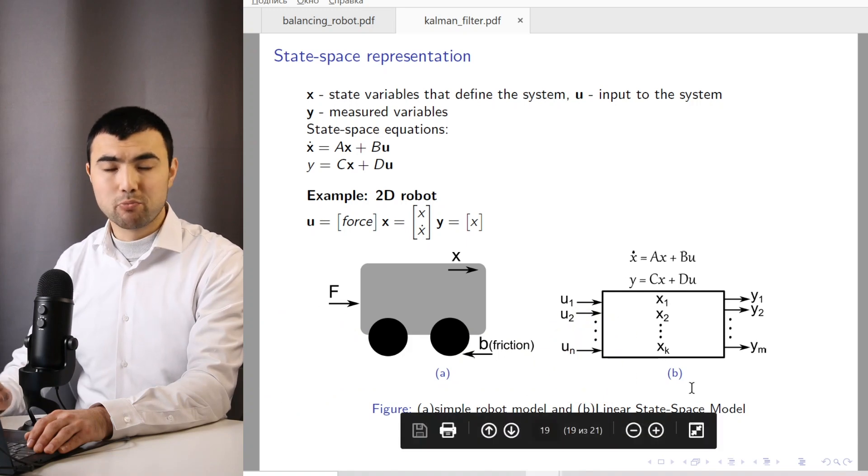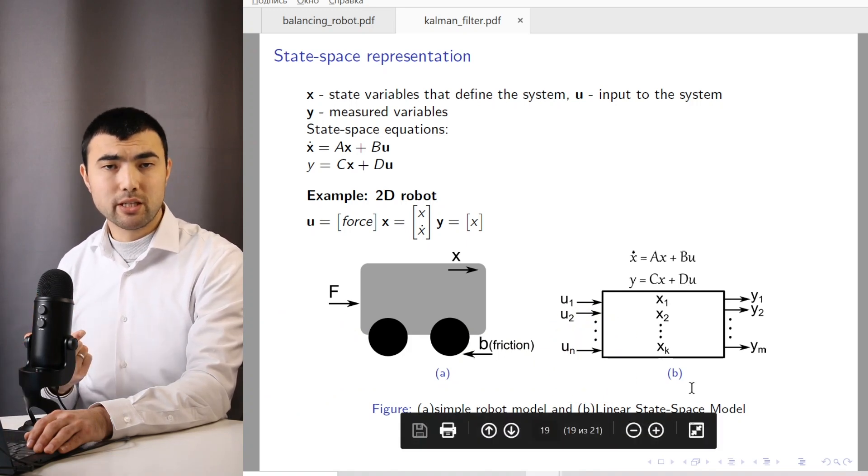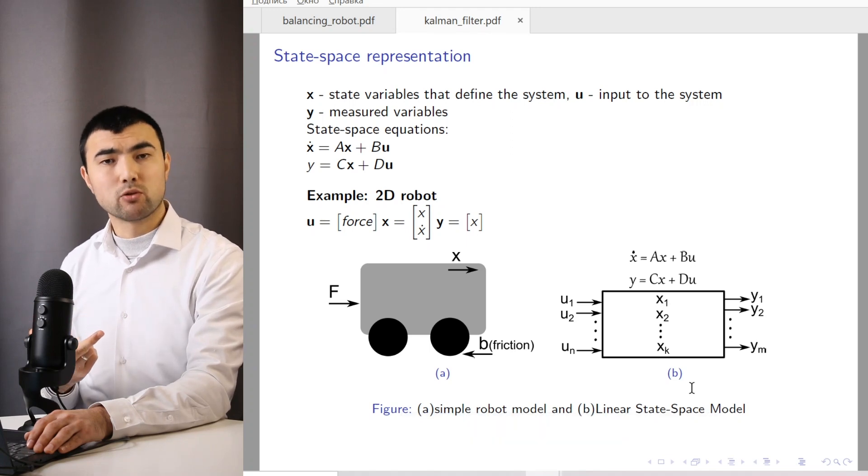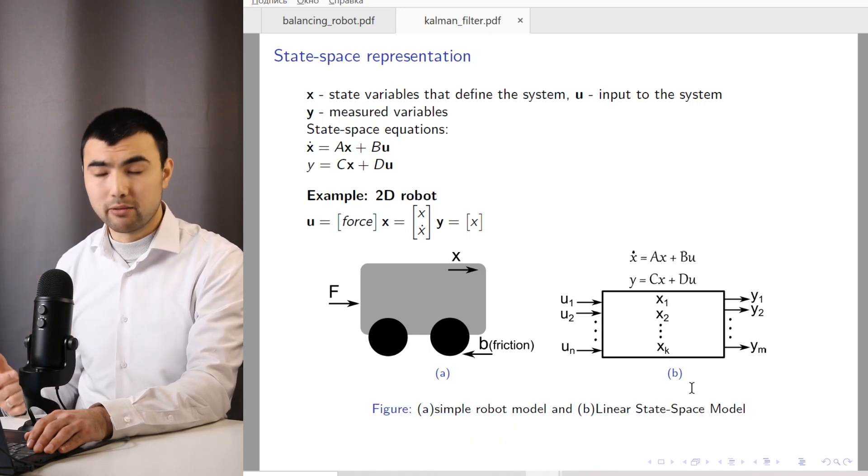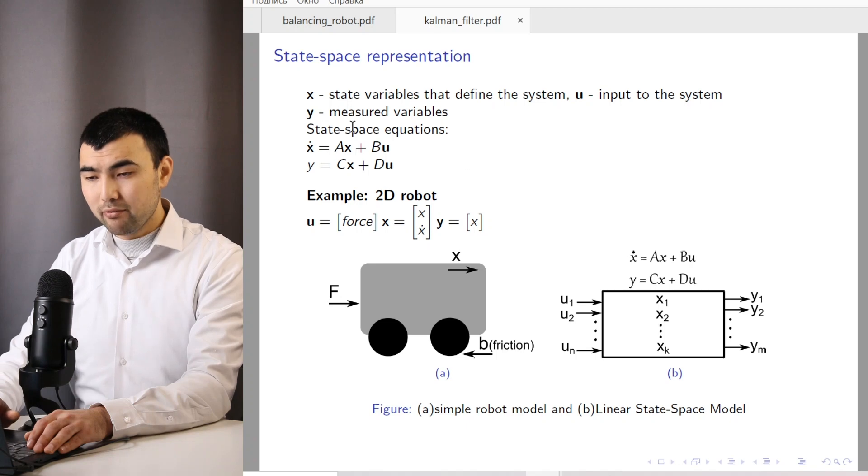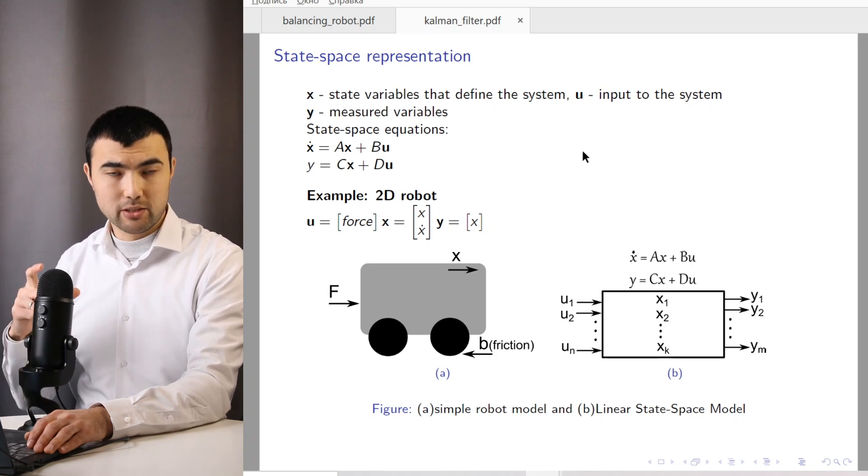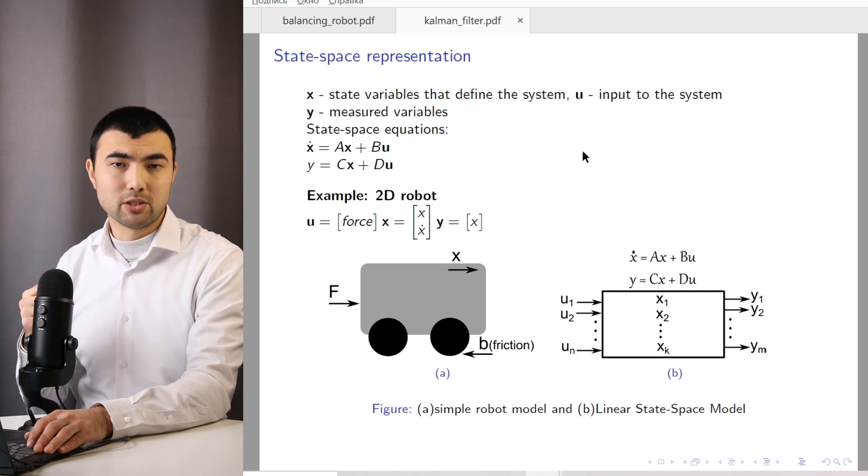And the state variables would be tilt angles, the velocity, the position of the quadcopter, and even battery level. So here we have X, U, and Y, and they are vectors. They're not just one-dimensional variables.